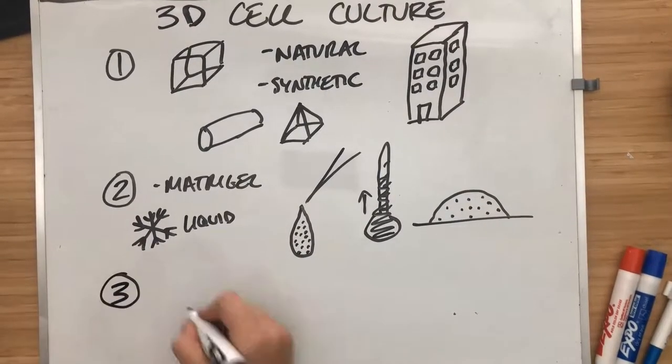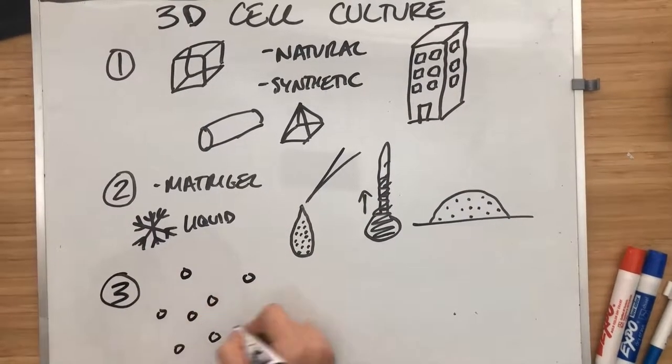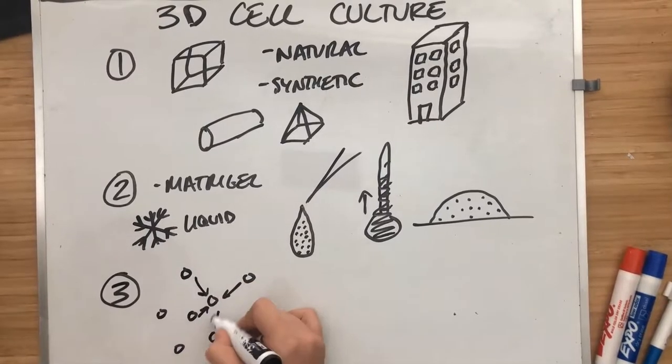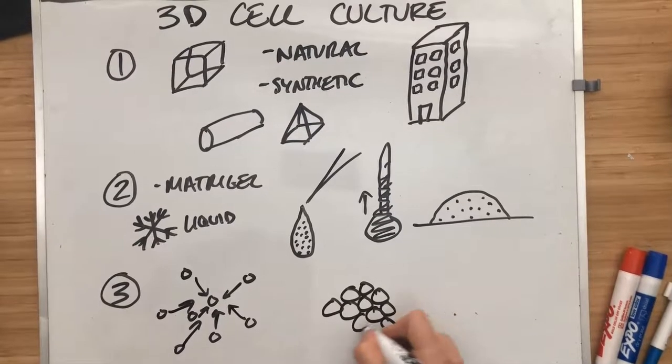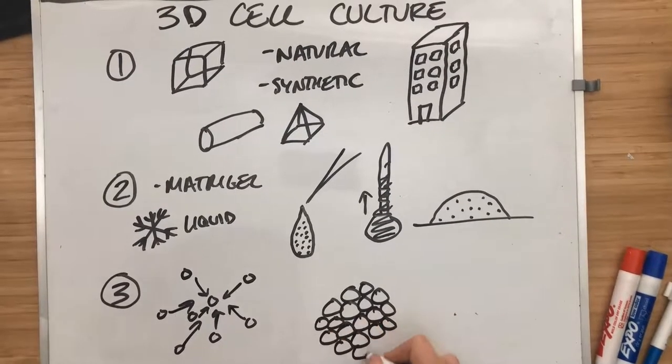One third way is to create organoids or spheroids. Here, cells are grown in suspension. They approximate together and form these big globs of cells or spheroids and organoids. And these are really helpful for modeling specific organs in the body.